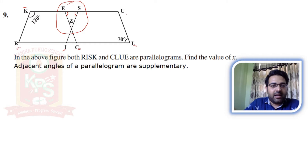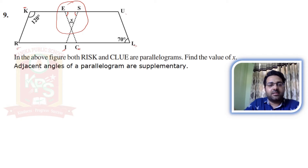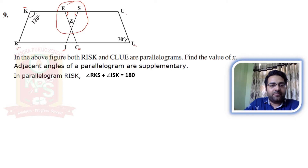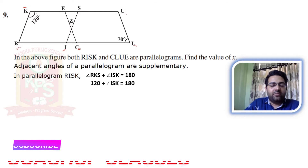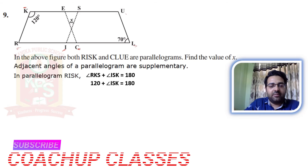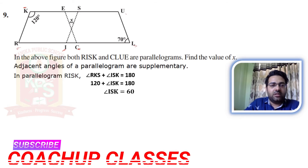First, how do we find angle S? In parallelogram RISK, adjacent angles are supplementary. So angle KSI plus 120 degrees equals 180 degrees. Therefore, angle ISK equals 180 minus 120, which equals 60 degrees. So this angle is 60 degrees.